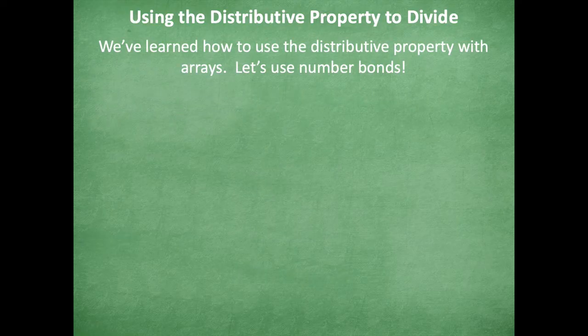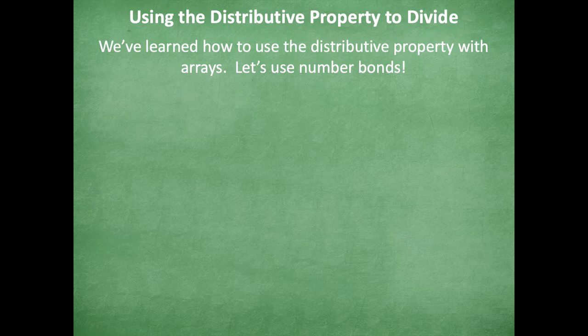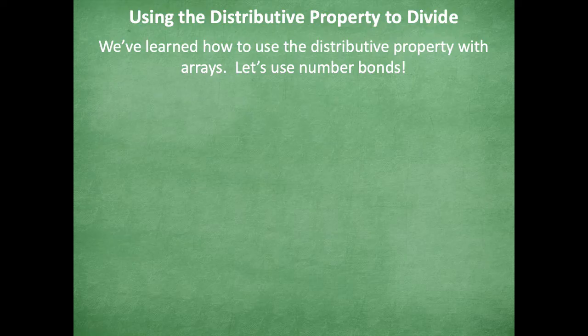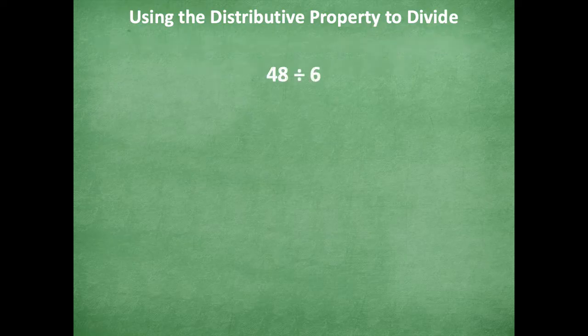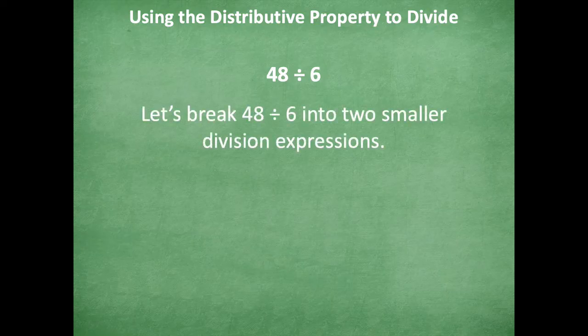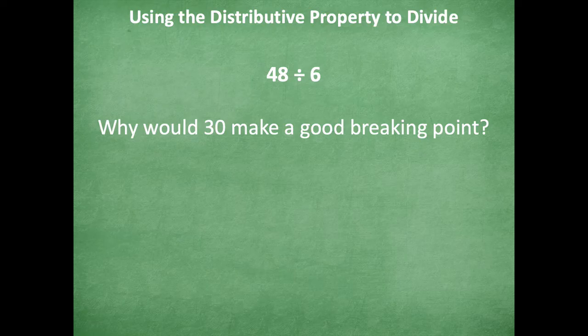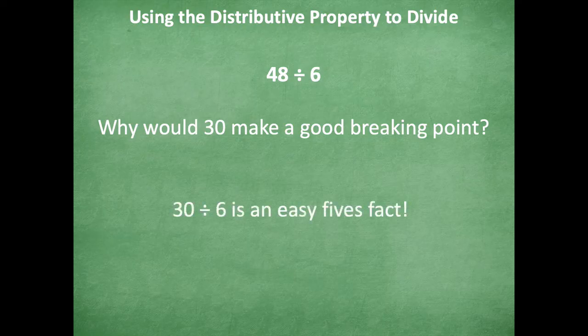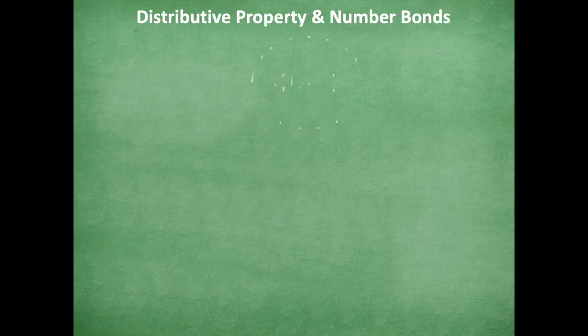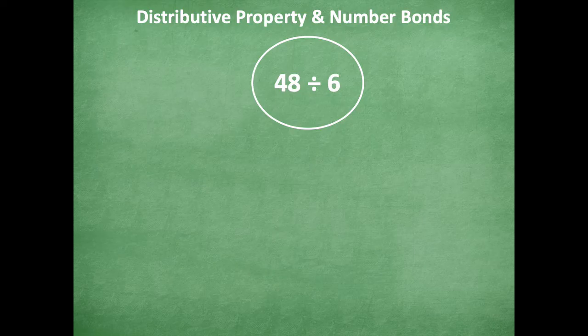Okay, so now we're going to talk about how we can use the distributive property to divide. So we've learned how to use the distributive property with arrays. Now let's use number bonds. So here we have 48 ÷ 6. Let's break 48 ÷ 6 into two smaller division expressions. So I'm thinking about 30. Why do you think 30 would make a good breaking point to break that number bond up? Yeah, because 30 ÷ 6 is an easy fives fact. So we know that 30 ÷ 6 = 5, because we know that 6 × 5 = 30.